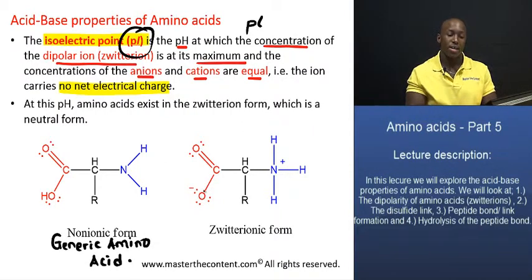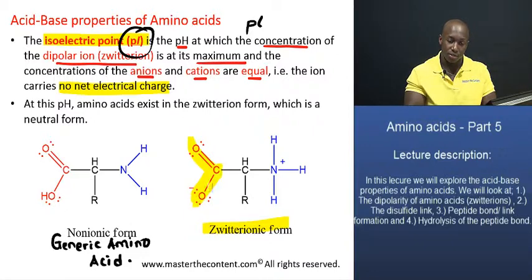And what actually happens under physiological conditions at a pH of about 7, it will actually exist in its zwitterionic form, in which we have a negative charge on that carboxyl group right there, and we have what is essentially a positive charge on that amino group right there.